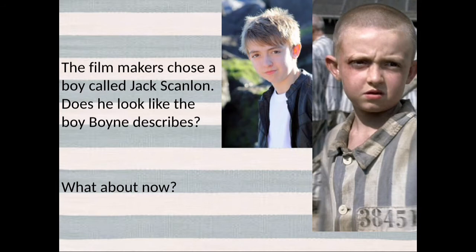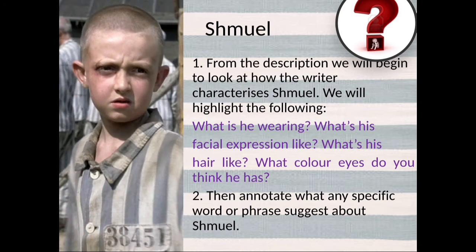You just need one thing to occur. Maybe you fall on hard times, and when you're stripped bare of all the trappings, all the money, you can then see what you become. So the boy Jack becomes Shmuel, and he is a very believable Shmuel. From the description, we will begin to look at how the writer characterizes Shmuel — what he's wearing, his facial expression, his hair, and what colour eyes you think he has, just from the description in the novel.